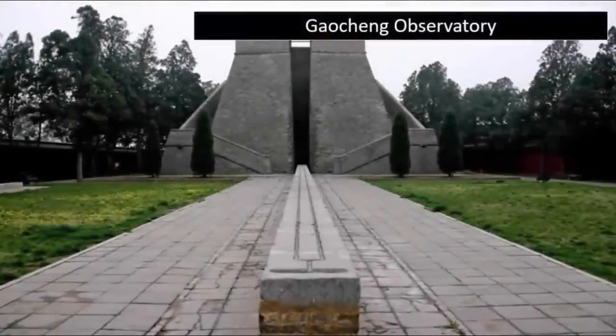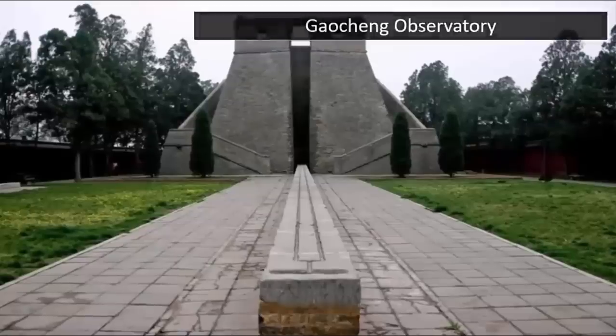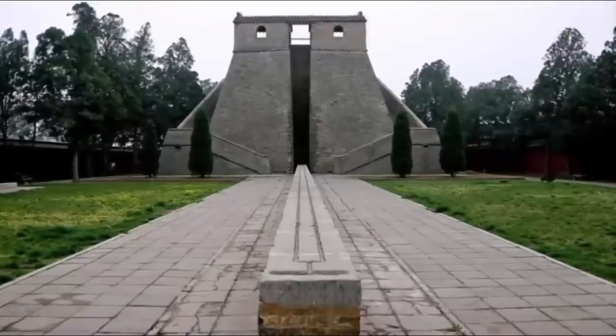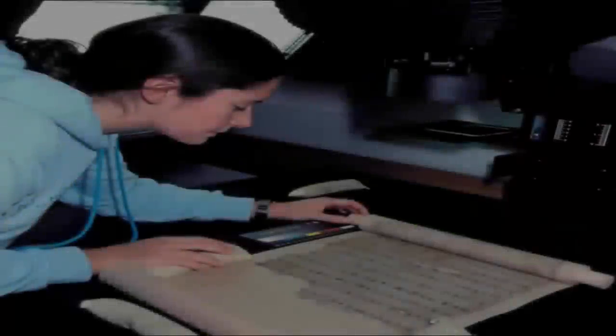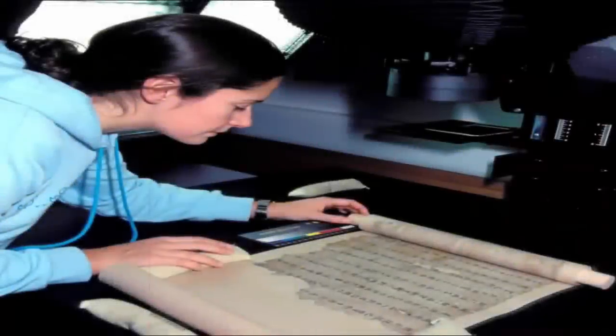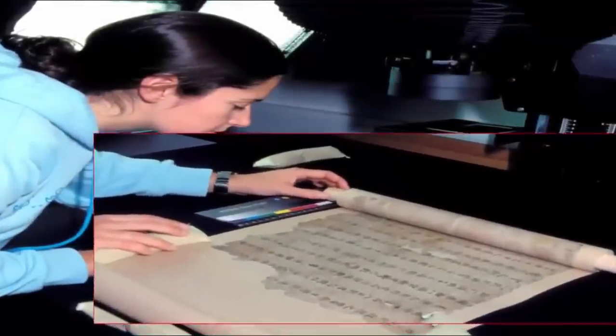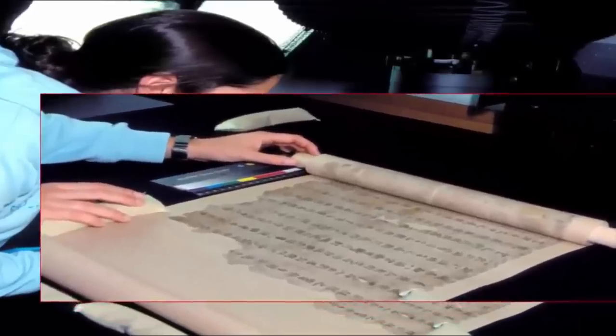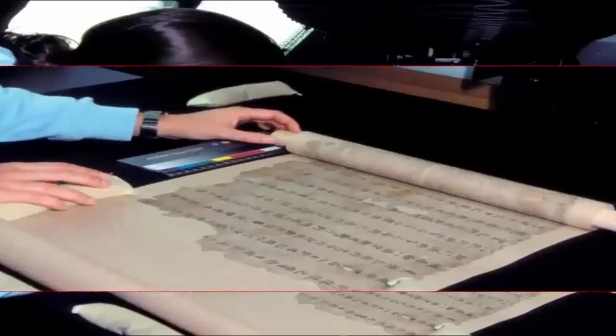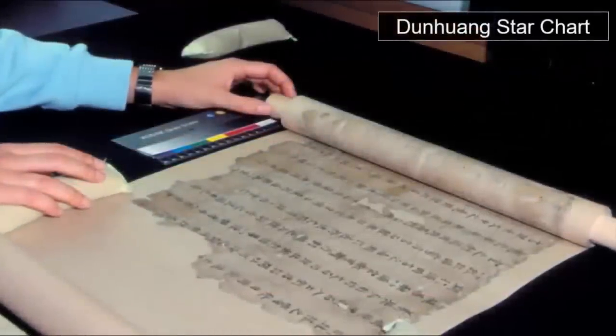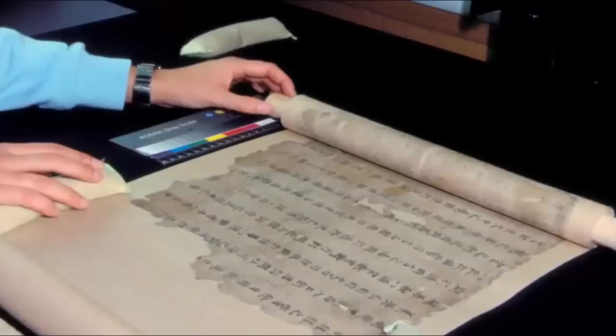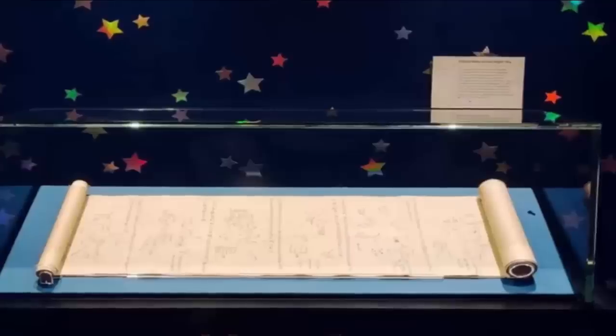Ancient star maps of such accuracy and range that due to currently attested academic understandings of the history, they simply should not have possessed such knowledge, let alone been able to accurately illustrate it upon parchment. Known as the Dunhua star chart, the chart is the first accurate graphical representation of star locations within ancient Chinese astronomy, and it is of nearly every star across the Atlas.